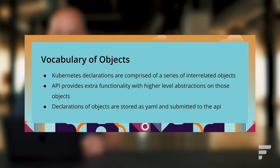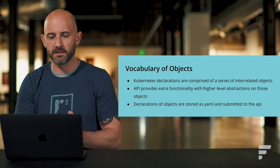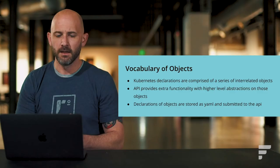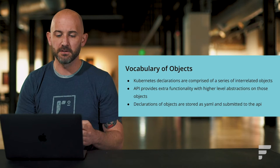For the next part of our Kubernetes 101, we'll talk about Kubernetes primitives — vocabulary and concepts that will be helpful when working against the Kubernetes API. Kubernetes is organized into a series of objects on which you do typical CRUD operations — create, read, update, and delete — through the API. Kubernetes declarations are comprised of interrelated objects, and the API provides extra functionality with higher-level abstractions. Declarations are typically stored in YAML format, which you can put into version control or store locally and submit to the API.